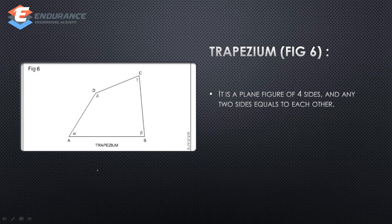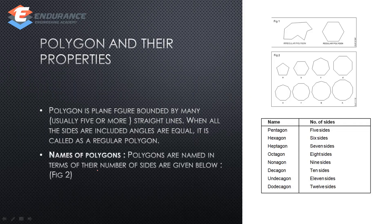Trapezoid is a plane figure. The next one is polygon and their properties. A polygon is a plane figure with usually five or more sides. All sides are equal to each other — we call it a regular polygon. We can name polygons by their number of sides: 5 sides is pentagon, 6 sides is hexagon, 7 sides is heptagon, 8 sides is octagon, 9 sides is nonagon, 10 sides is decagon.